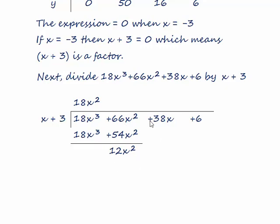So the next thing we do is to bring the 38x down. We now ask, what do we multiply x by to get 12x squared? Well, obviously, the answer is 12x. So we multiply both of these terms by 12x, giving us 12x squared plus 36x. We subtract this line from this line, giving us 2x.